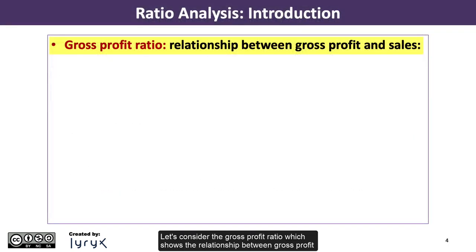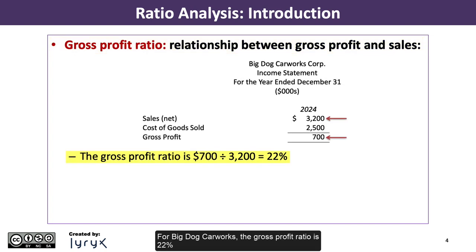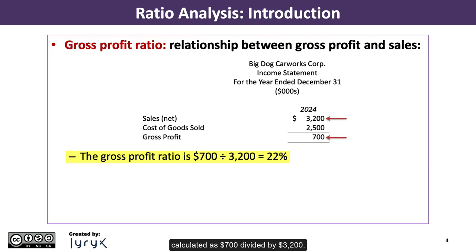Let's consider the gross profit ratio, which shows the relationship between gross profit, the numerator, and sales, the denominator. For Big Dog Carwex, the gross profit ratio is 22%, calculated as $700 divided by $3,200.